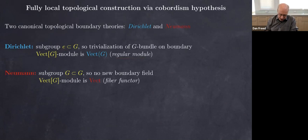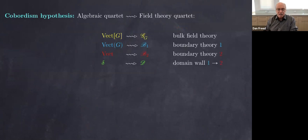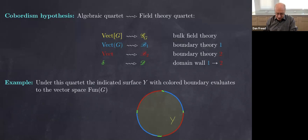There are two canonical subgroups — the trivial group and the full group G. One corresponds to the regular module (the categorified ring is a module over itself) and the other corresponds to a fiber functor or augmentation. So we get this quartet of algebraic data: this tensor category, these two canonical modules, and a canonical intertwiner between them. A souped-up version of the cobordism hypothesis allows us to make a single field theory in dimension three with two boundary theories connected by what's called a domain wall.